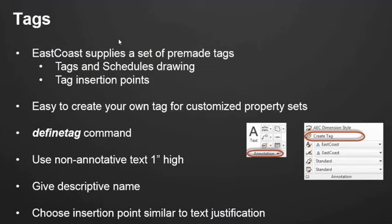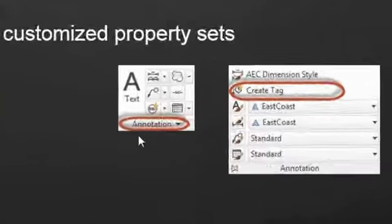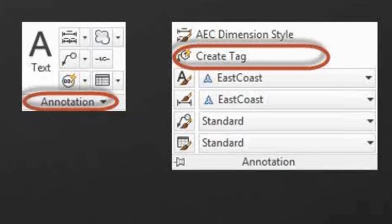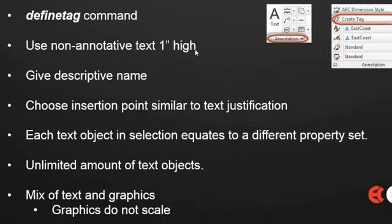What I want to speak about on tags today is how to create your own if you need to — it is very simple. At the command line, start the define tag command, or on the Home tab of the ribbon go to the Annotation panel, select the dropdown, and choose Create Tag. Before you start the command, you need to have some text in your drawing that will become the tag. That text needs to be a non-annotative text style and one inch high to react to annotative scaling correctly.